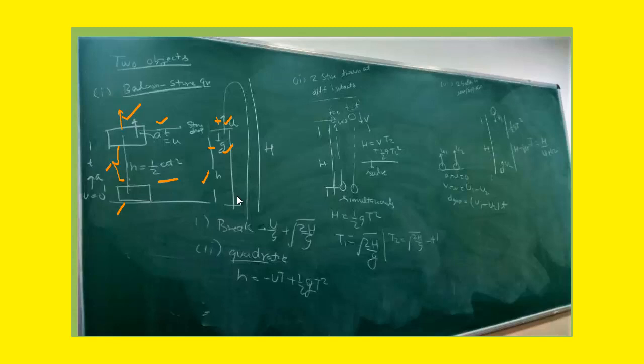To find the time of flight, apply s = ut + ½at². Taking upward as positive and downward as negative: s = −h, u = +u (upward), and acceleration = −g. So: −h = ut − ½gt². Equivalently, with upward as negative and downward as positive: h = −ut + ½gt², which is just the same equation multiplied through by −1 on both sides.